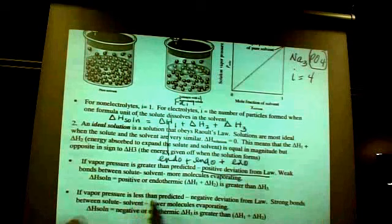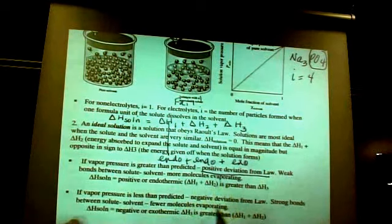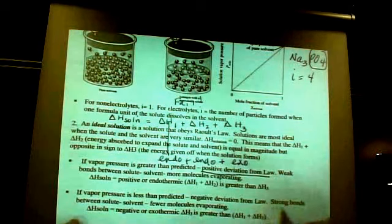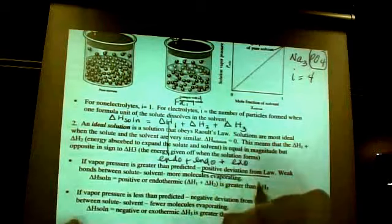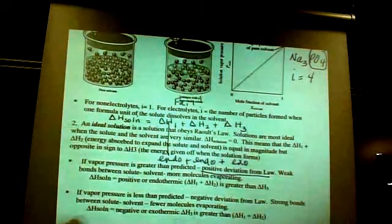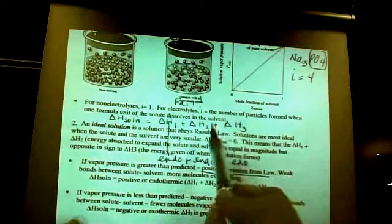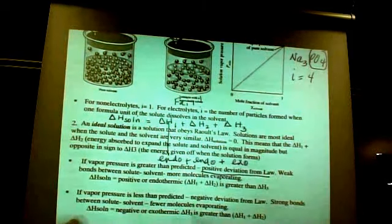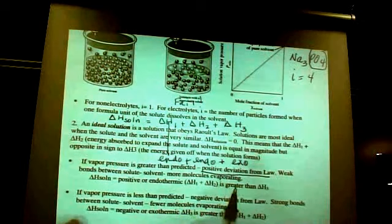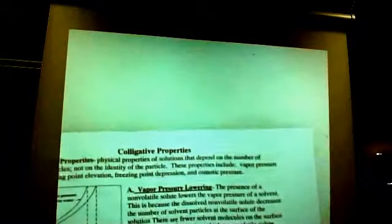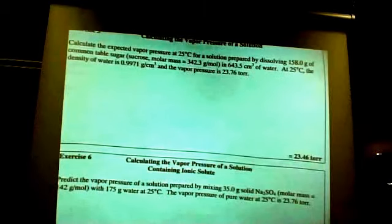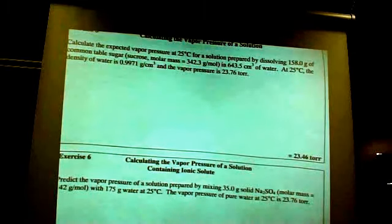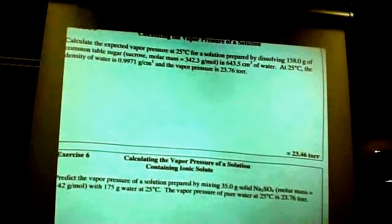If the vapor pressure is less than predicted, that's a negative deviation from the law. That means there are strong solute-solvent attractions. This is a bigger quantity. So if this is bigger than these two are, that means that the solute and the solvent are hanging around together and they like each other. And here we go. So if there's more energy being given off, that means that the solute and solvent released energy when they combine. Ladies and gentlemen, I am now going to stop this, which means that unfortunately we're going to have two separate files.